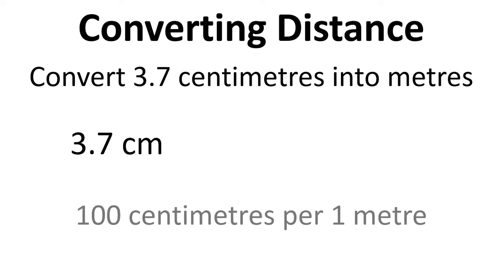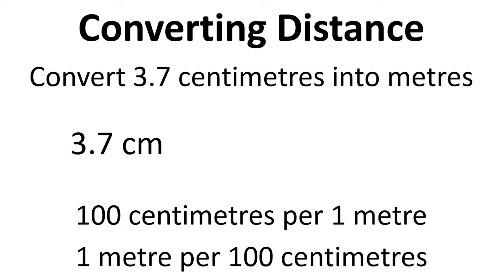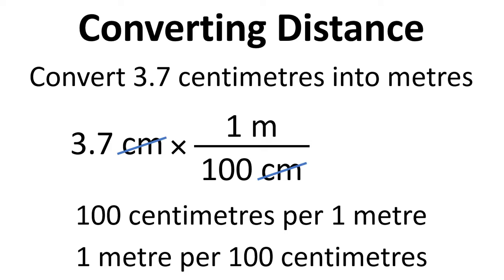So we start off with the 3.7 centimetres, and we know that there's 100 centimetres for every metre, or we can write that the other way round, there's 1 metre for every 100 centimetres. So if we multiply this by 1 metre divided by 100 centimetres, we can then cancel out the centimetres and calculate 3.7 divided by 100, and we get 0.037 metres.